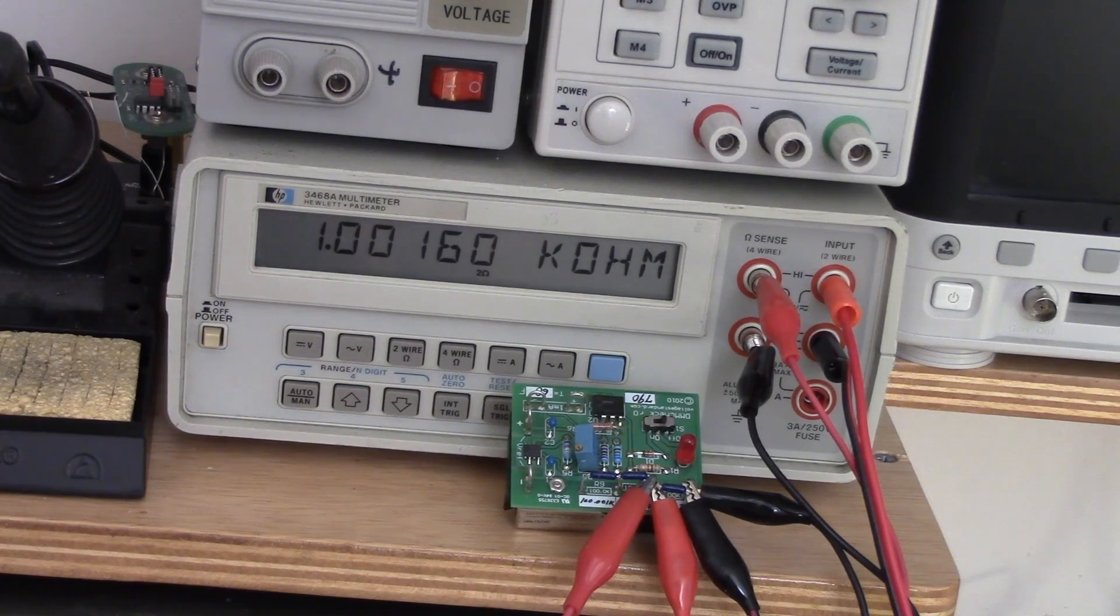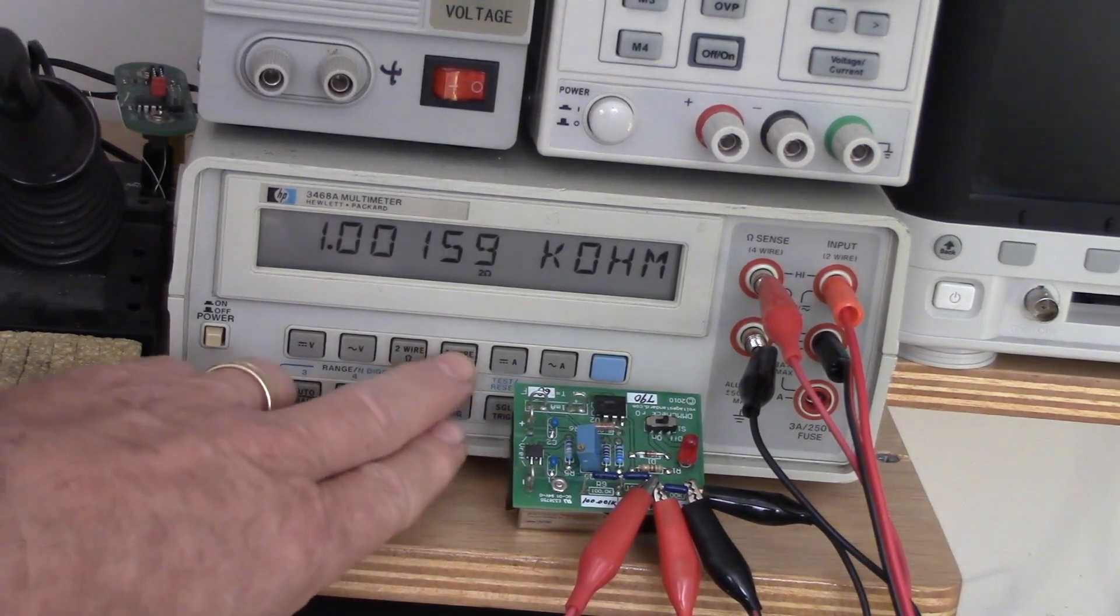However, of course, as I said before, this is wrong. As you can see by the wiring, there are now four wires going to that resistor, just like I diagrammed on the whiteboard, and by pressing the 4-wire button...